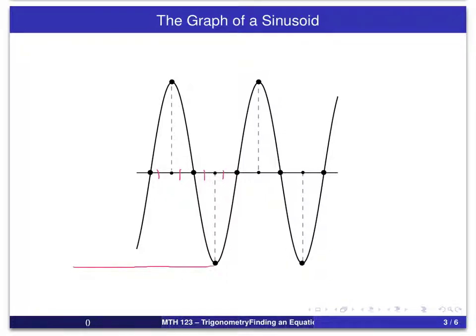If we look at this distance from the high point down to the low point, the vertical distance, this is two times the amplitude. So that distance will be 2a. In other words, if we can determine the y-coordinates of those two points, we can determine the amplitude. We'll just subtract the two y-coordinates to get that distance between the high point and the low point.